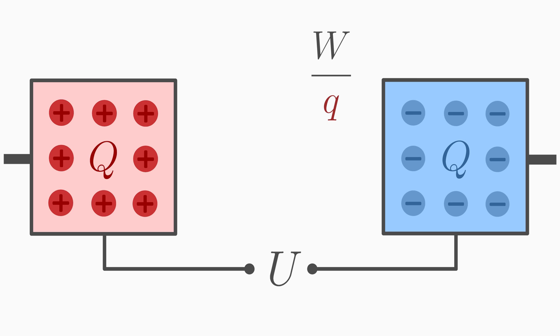And this quantity W over Q corresponds to the voltage U. This formula translated into words means voltage U is a measure of how much energy W a charged particle would gain if it travels from the positive to the negative pole.